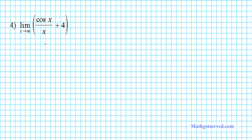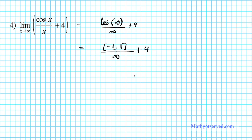Let's take a look at question number 4. We find the limit as x approaches infinity of cosine x over x plus 4. We can evaluate this by direct substitution: cosine infinity over infinity plus 4. Cosine infinity fluctuates between negative 1 and 1. When you divide any number in that finite interval by infinity, it's as though you're dividing a constant by infinity, which gives 0. So the answer is 0 plus 4, and your final answer is 4.